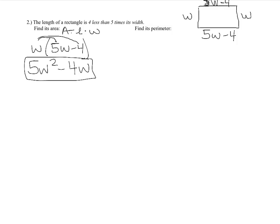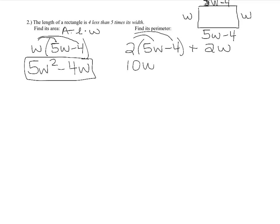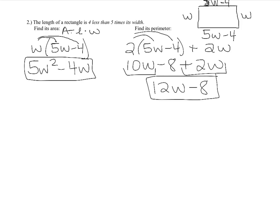For the perimeter, use the formula 2 times the length plus 2 times the width. That's 2(5w minus 4) plus 2w. Distribute the 2 to get 10w minus 8, then add 2w. Combining like terms: 10w plus 2w is 12w, giving 12w minus 8 as the perimeter expression.